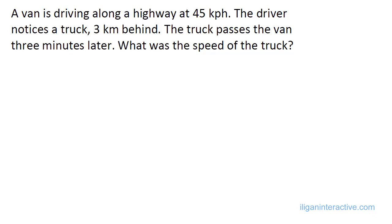A van is driving along a highway at 45 km per hour. The driver notices the truck 3 km behind. The truck passes the van 3 minutes later. What was the speed of the truck?